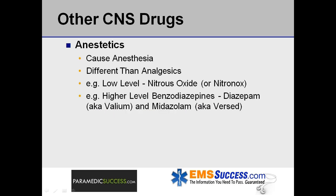Anesthetics are drugs that cause anesthesia, or reversible loss of sensation. They are different than analgesics, which relieve pain without the elimination of sensation. Examples range from low-level anesthetics like nitrous oxide or Nitronox to higher-level benzodiazepines such as diazepam or Valium and midazolam or Versed.